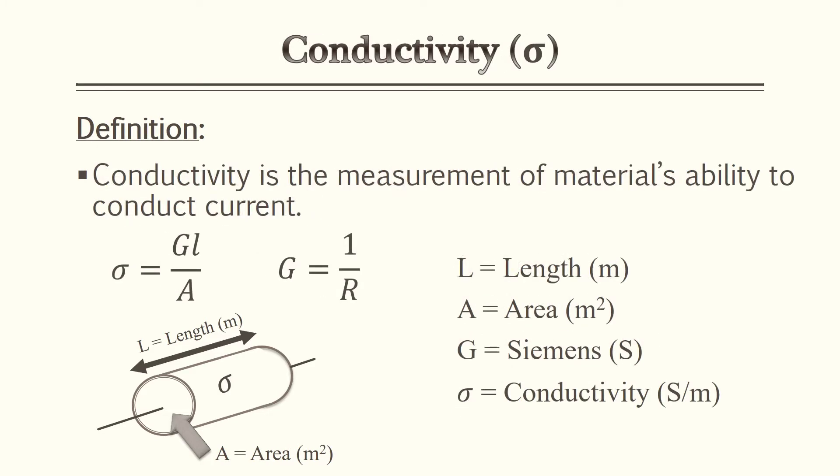Next is conductivity. Conductivity is the measurement of a material's ability to conduct current. With resistivity we're talking about how a material impedes current; now we're talking about how it conducts current — you're saying the same thing, just in a different way. Just like last time, we need to know the material, the length, and the area.